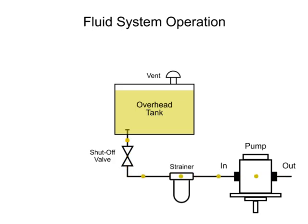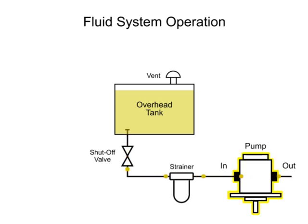The placement of fluid system components in relation to each other is critical to successful operation of the system. Fluid naturally flows from areas of high pressure to areas of low pressure. Pumps operate by creating low pressure at the inlet, which allows liquid to be pushed into the pump by atmospheric pressure or pressure head.